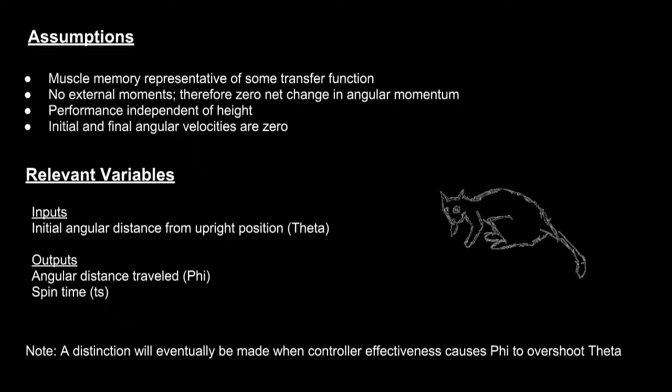In order to properly describe our dynamic system, we made some assumptions that simplified the overall process. First off, we assumed that the muscle memory of the cat was representative of the transfer function we found in our control law. Second off, we found that there were no external moments applied, therefore there was a zero net change in angular momentum. We also assumed that the ability of the cat to be able to right itself was independent of the height from which it was dropped, which it turns out is actually a true physical statement. We also assumed that the initial and final angular velocities of the cat itself are zero.